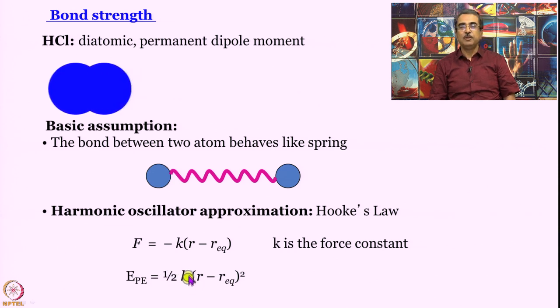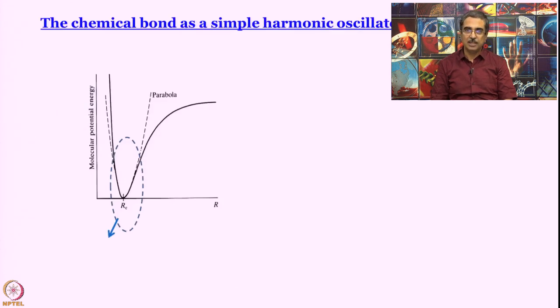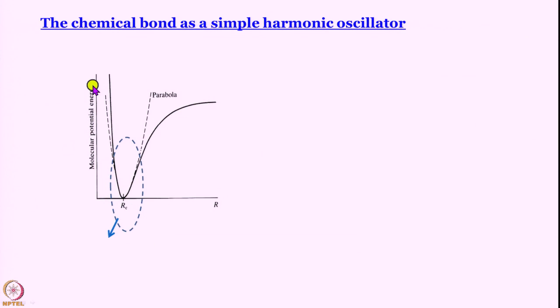And that potential energy is a parabolic potential. Half k times r minus r_eq squared, where r_eq is the equilibrium bond length. So deviation from that and square of that gives you the parabolic potential associated with harmonic oscillators. So harmonic oscillator is the approximation we are going to use at least to start with.